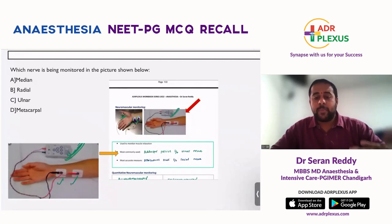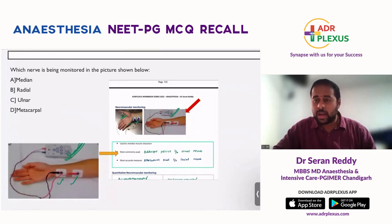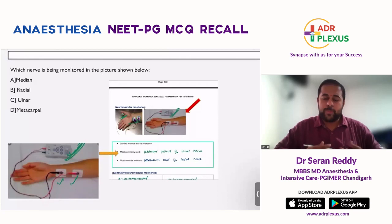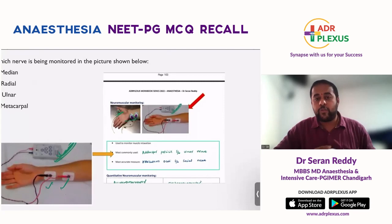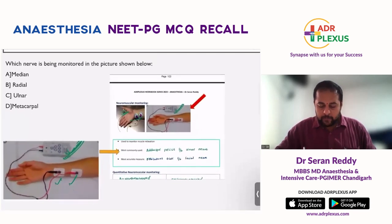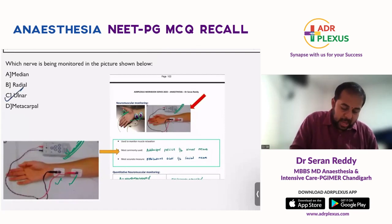The muscle shown is adductor pollicis, which is supplied by the ulnar nerve. This is a qualitative type of measurement where the train-of-four ratios and various types of measurements are made by stimulating the nerve and observing the muscle response through tetany or train-of-four response. The quantitative neuromuscular monitoring, like acceleromyography, is used to monitor muscle relaxation. The most commonly used muscle is adductor pollicis supplied by the ulnar nerve, while the most accurate measurement site is orbicularis oculi supplied by the facial nerve. So the correct answer is the ulnar nerve.